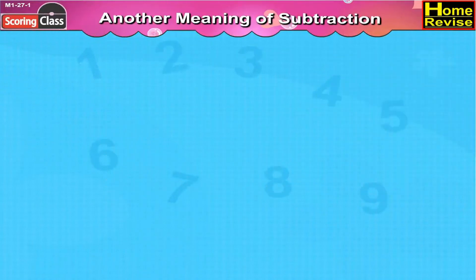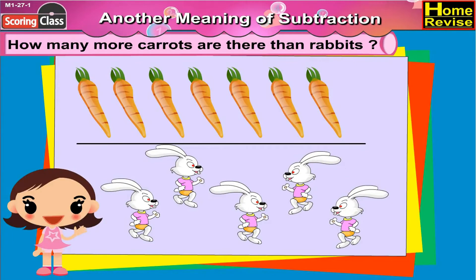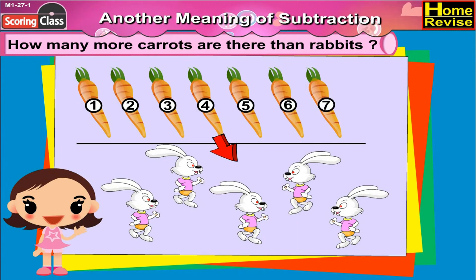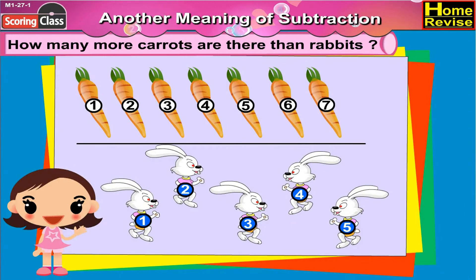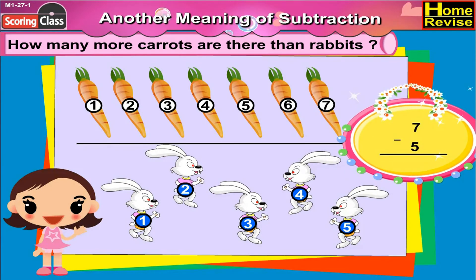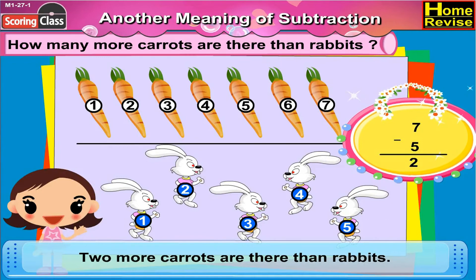Another meaning of subtraction. How many more carrots are there than rabbits? Can you see the picture of carrots and rabbits? Let us count the number of carrots: 1, 2, 3, 4, 5, 6, 7. And how many rabbits are there? 1, 2, 3, 4, 5. 5 rabbits. Okay, tell me, is the number 7 bigger or smaller than 5? You are right, number 7 is bigger than 5. By how much? Yes, 2. So, 2 more carrots are there than rabbits.